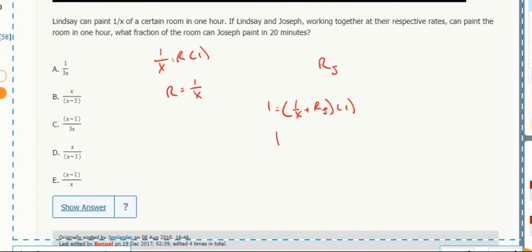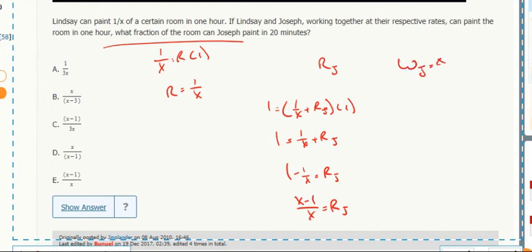This X minus one over X. They're going to ask what fraction of the room. What fraction of the room or what percent of the room or what fraction of the work can they do? This just means the work of Joe is the rate of Joe times 20 minutes, which is a third of an hour. So X minus 1 over 3X.